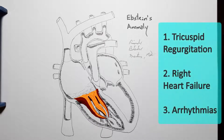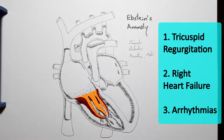Which brings us to the major complications: tricuspid regurgitation, right heart failure, and arrhythmia. Because the tricuspid leaflets are malformed and displaced, it's unlikely they represent a perfect seal when closing.